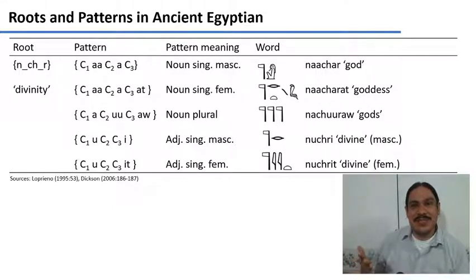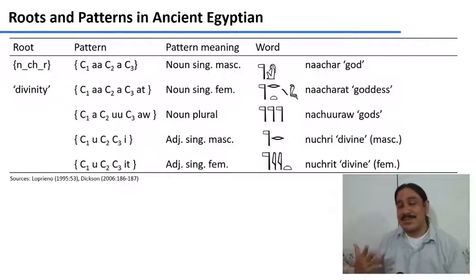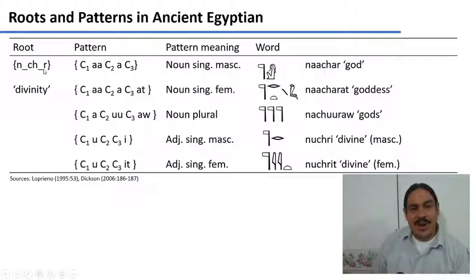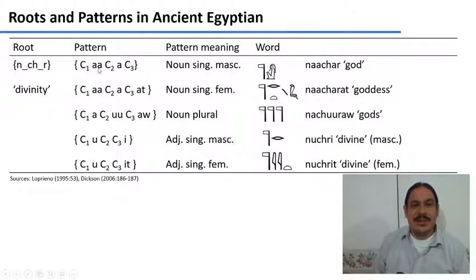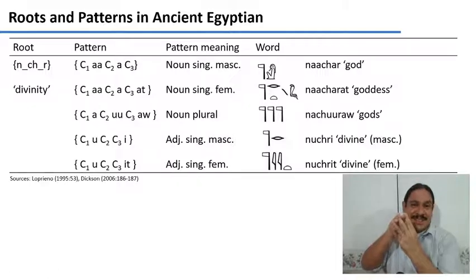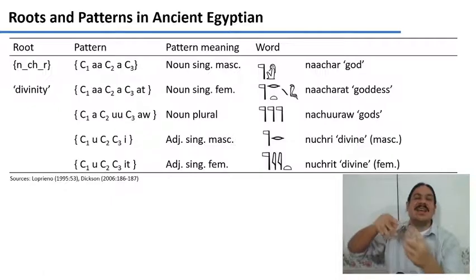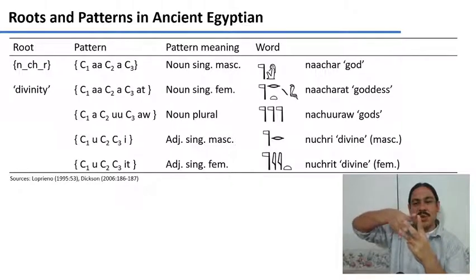If you look at the hieroglyphs, they look like drawings, but they are really consonants that work much like our consonants. Writing in ancient Egyptian is absolutely beautiful — please study it if you have time, because it's amazing. Most of the characters are consonants, and in those consonants we find roots. For example, the three-letter root N-CH-R means things related to divinity. When you interleave that root with the pattern C1-long A-C2-short A-C3, you get 'Natar' — God, a singular masculine noun. When you interleave it with the pattern A-A-at, you get 'Natarat' — Goddess. If you want to make the plural, the pattern gives 'Naturo' — Gods.